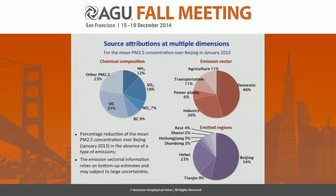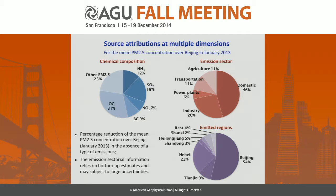Putting them together, we can look at source contributions from different aspects: chemical composition, emission sector, and emission region. Dust and organic aerosols are the main emission contributions for PM2.5 over Beijing. SO2 and ammonia emissions are also important. For the sectoral breakdown, domestic and industry are the biggest contributors, though this sectoral information may be subject to large uncertainty because it heavily relies on bottom-up estimates. Based on regions, local Beijing emissions account for about 54% of PM2.5.